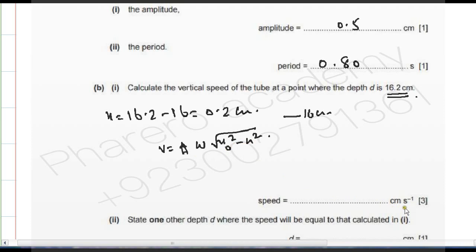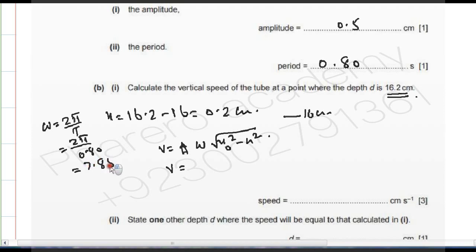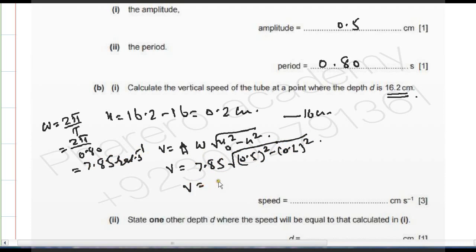Using the SHM speed formula: v = ω√(x₀² − x²). The angular frequency ω = 2π / T = 7.85 radians per second. So v = 7.85 × √(0.5² − 0.2²) = 7.85 × √(0.25 − 0.04). The calculation simplifies and v comes out to 3.6 centimeters per second.